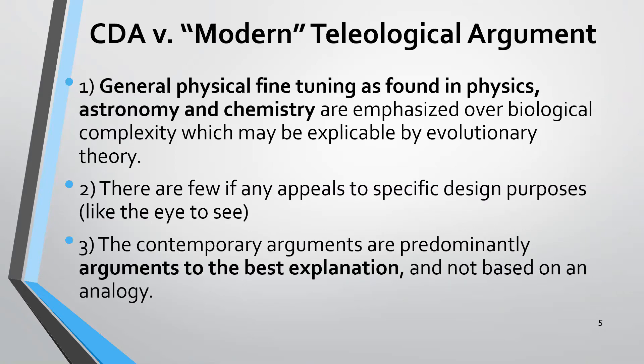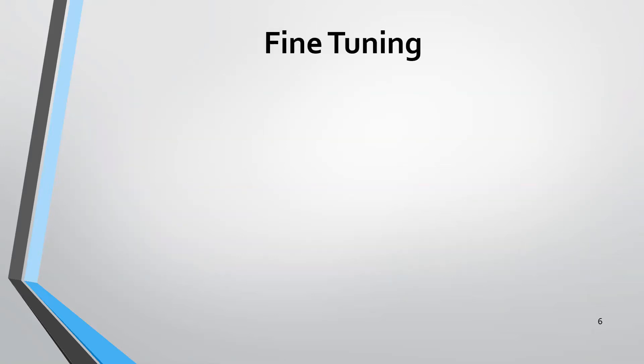Instead, it appeals to contemporary physics. Also, the structure of the reasoning in the CDA is different. The contemporary arguments are predominantly arguments to the best explanation, and the modern arguments are primarily arguments by analogy. That's not to say we won't use some analogy to help illustrate the Contemporary Design Argument.